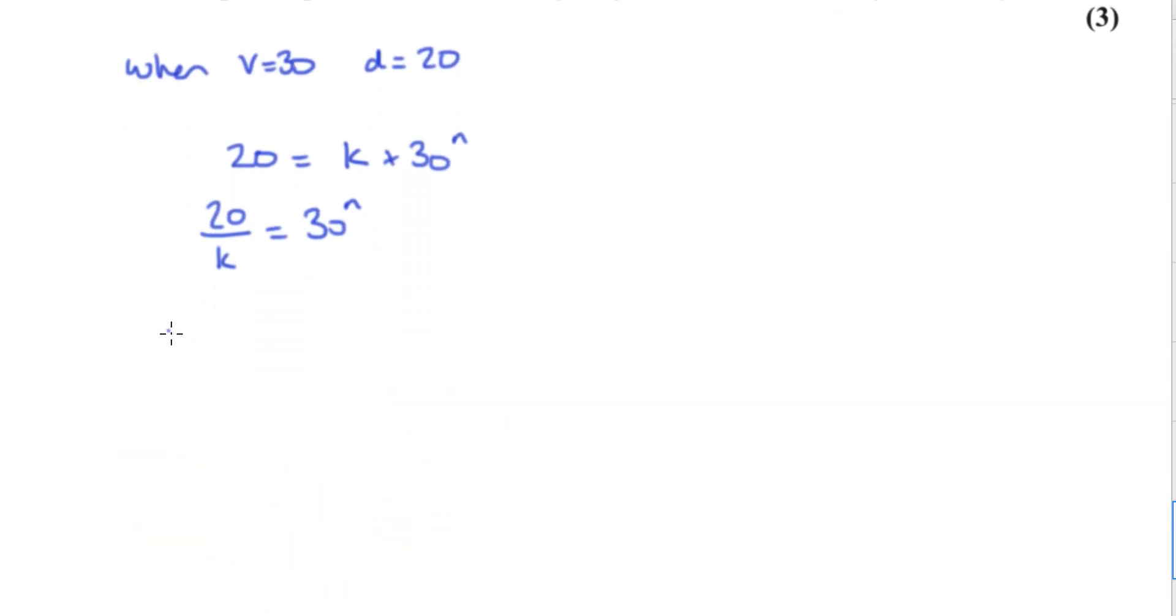And then log both sides. So if we do log to the base 10 because we used 10 earlier. Now notice I'm writing k down, but when I come to use the calculator I'm obviously going to use the 0.017 that they've told us to use. So n comes to the front.